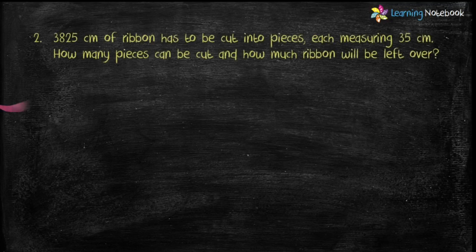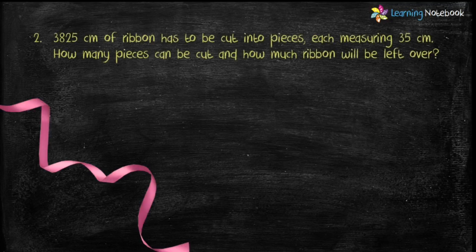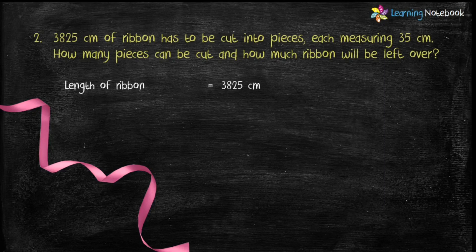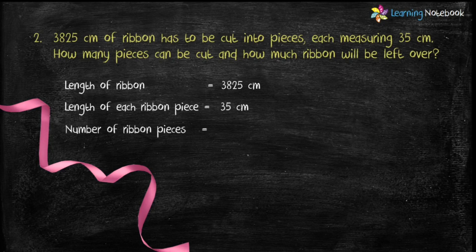Question 2 is: 3,825 cm of ribbon has to be cut into pieces, each measuring 35 cm. How many pieces can be cut and how much ribbon will be left over? Let's write the statements first. Length of ribbon equals 3,825 cm. Length of each ribbon piece equals 35 cm. Therefore, number of ribbon pieces equals 3,825 divided by 35.